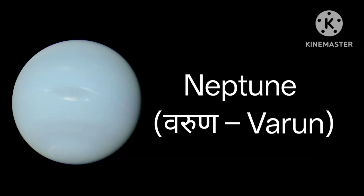The last planet in our solar system is Neptune. Do you know? Neptune is known as Varun Graha in Hindi.